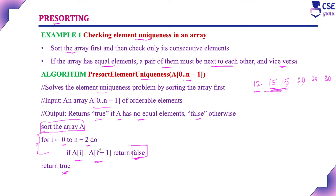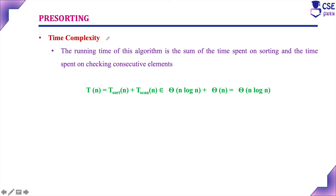In this example, the transformation stage is the pre-sorting step applied before solving the problem, and the conquering stage is scanning for element uniqueness. The time complexity for sorting is Θ(n log n), and scanning the array is Θ(n), giving an overall time complexity of Θ(n log n) for the element uniqueness problem using pre-sorting.